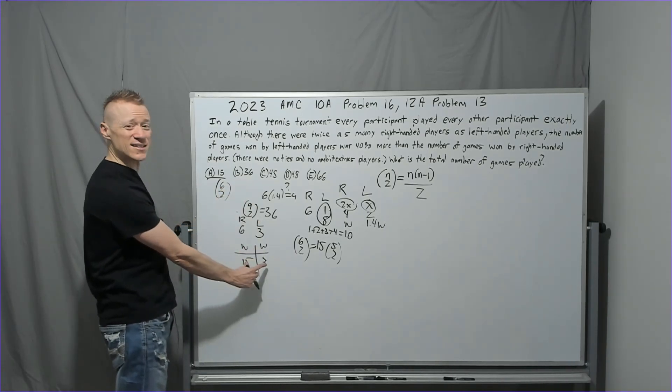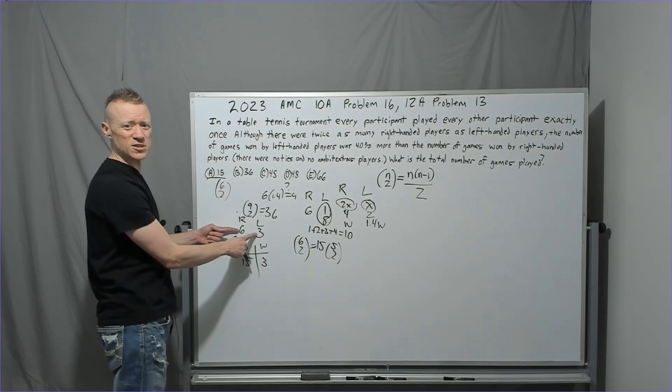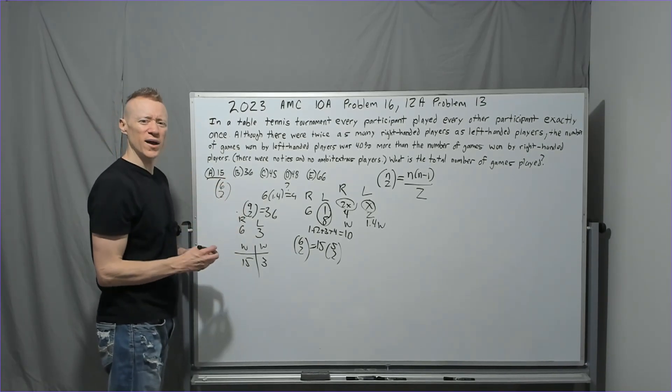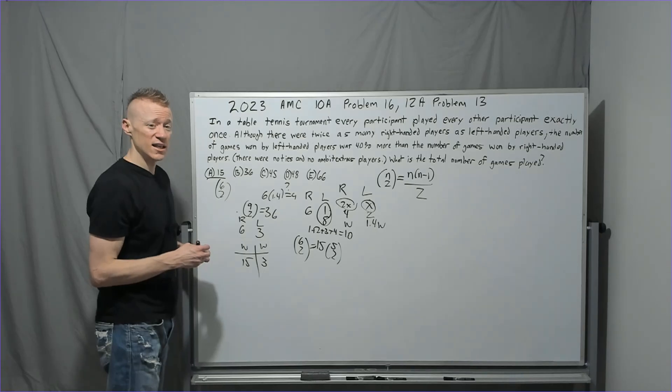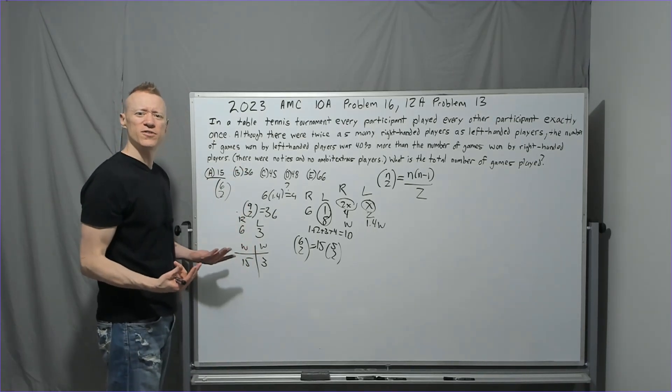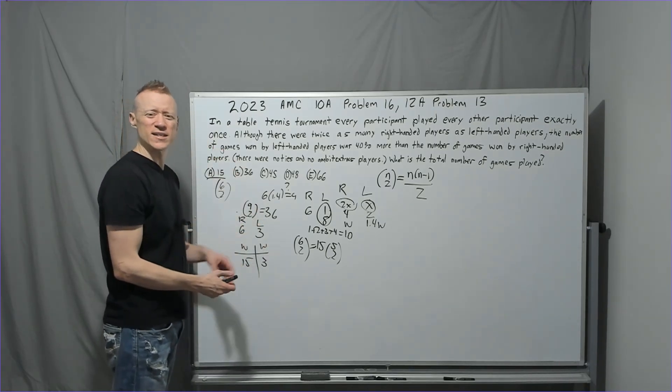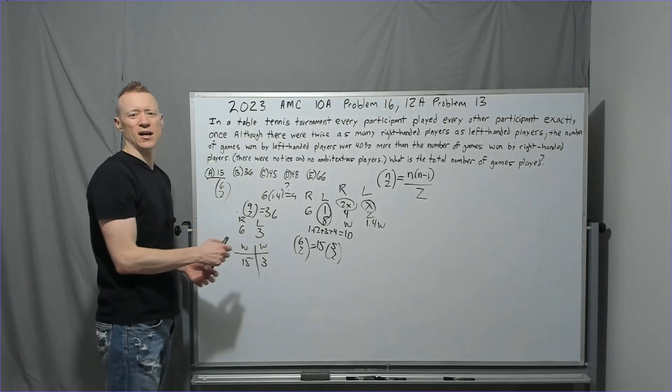You could just use 36 minus the 18 that have already been played, or you could multiply 6 times 3. Why do I do it both ways? Because it helps you dodge errors. If you did this, and then you checked it the other way, and it didn't match, what would you figure out? There's something wrong with your reasoning.